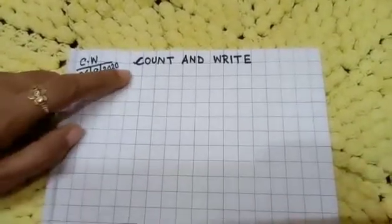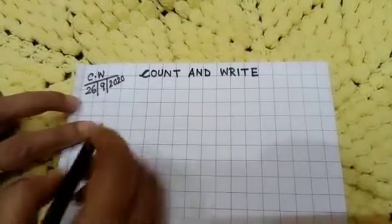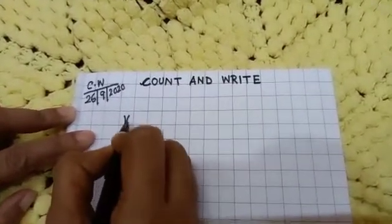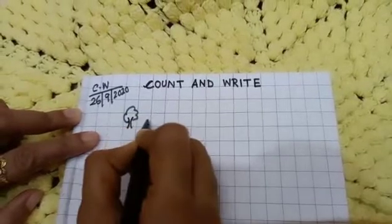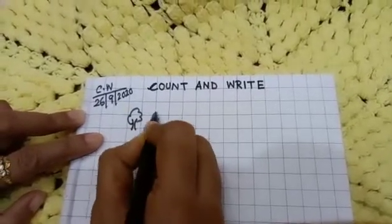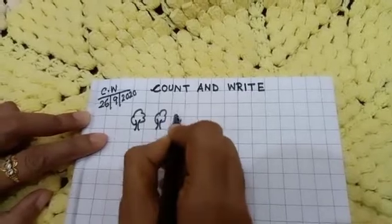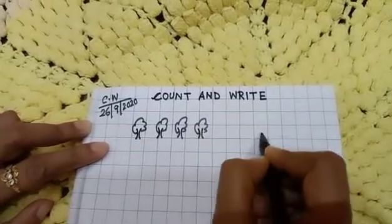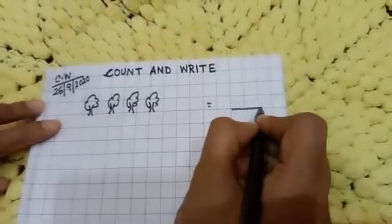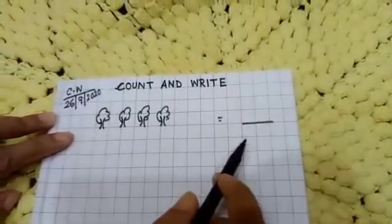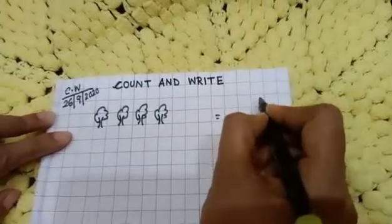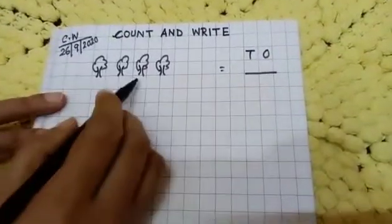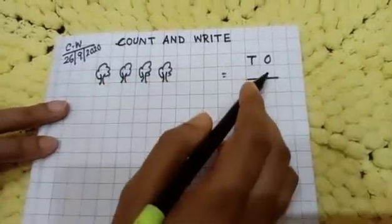Okay, so here you leave two boxes and draw trees. Okay, so how many trees are there? You just count and write here under one sentence. How many trees are there? Count and write down here.